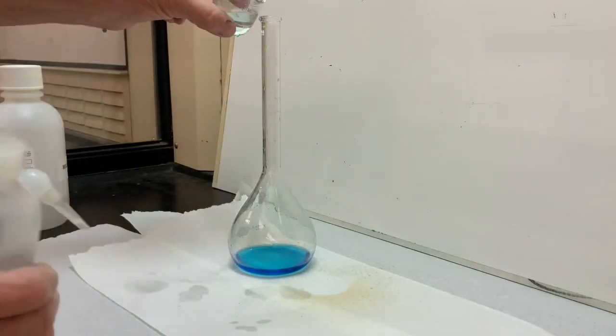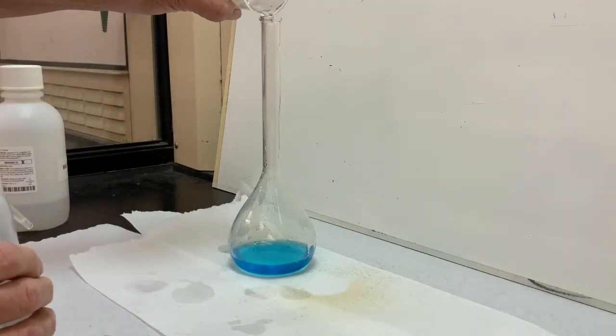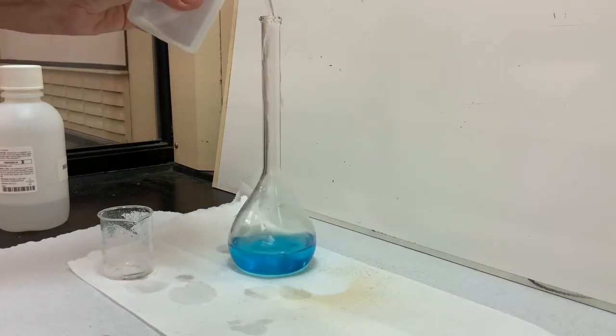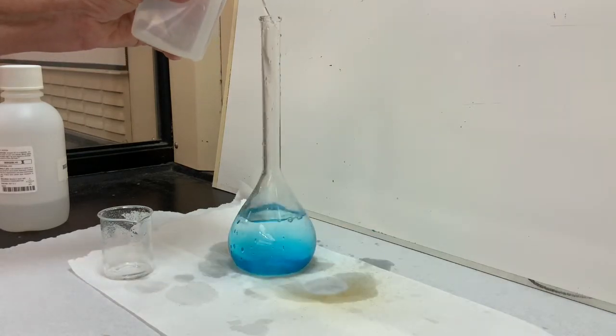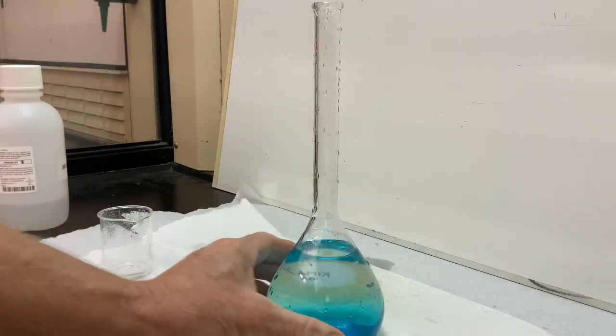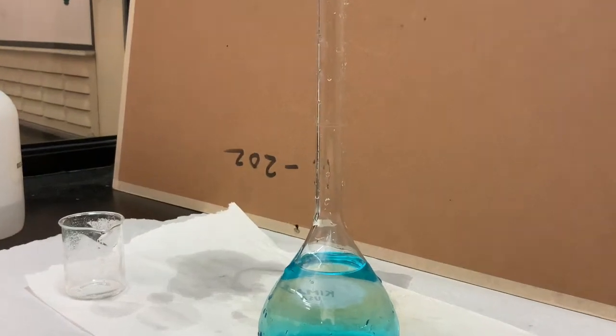It's important to rinse the beaker and make sure that all of the copper ions make it into the 250 milliliter flask, which then will be filled to the line, which is hard to see with the white background. So I'll change that background to the other side of the whiteboard.